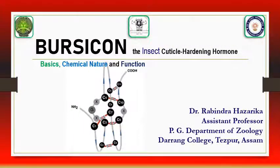Hello friends, most welcome to another video tutorial of the Zoological Society of Assam. Myself, Dr. Robindro Hajarika, Assistant Professor, P.G. Department of Zoology, Doronko Lestespura, Assam. In today's lecture, let me try to explain about an important neurohormone in insects — that is Bursicon, commonly called the insect cuticle hardening hormone — its chemical nature and function.